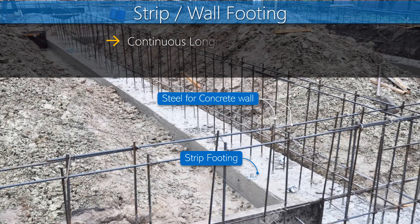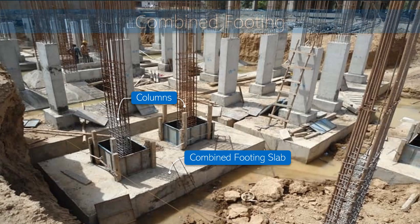The next type of shallow foundation is strip or wall footing. It is a continuous longitudinal strip of reinforced concrete that serves as the foundation for a brick wall or concrete wall.